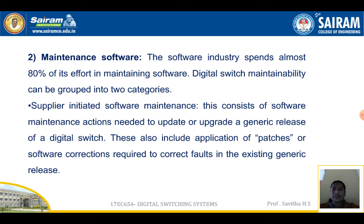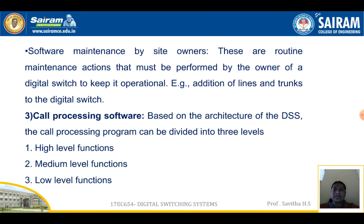Basic software maintenance for a digital switch can be classified into maintenance software, call processing software, and database software. The software industry spends almost 80 percent of its effort in maintaining software. Digital switch maintainability can be grouped into two categories: first, supplier-initiated software maintenance, consisting of software maintenance actions needed to update or upgrade a generic release of a digital switch, including application of patches or software corrections to fix faults in the existing generic release. Second, software maintenance by site owners — routine maintenance actions performed by the owner of a digital switch to keep it operational, such as the addition of lines and trunks.